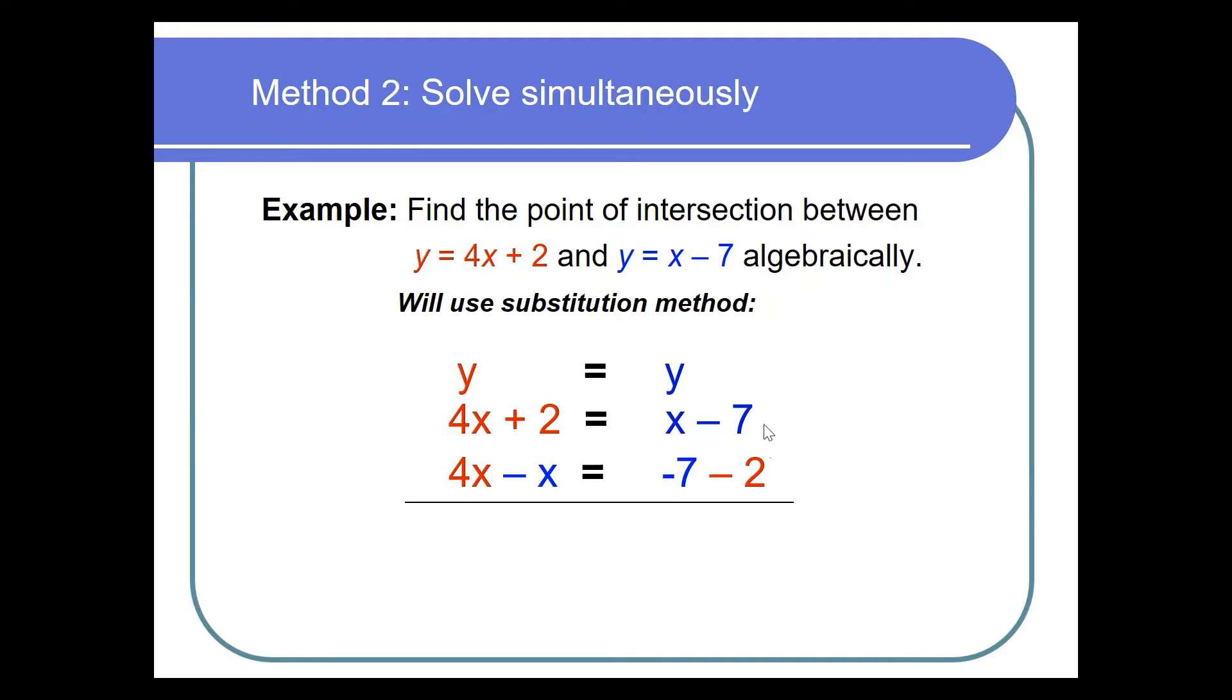So when we switch, we switch the sign. So you can see plus has gone on the other side of the equal sign, it's now minus, and this positive 2 is going on the other side and it changes from plus 2 to minus 2. And then we can quickly simplify this. So 4x - x is 3x and -7 - 2 is -9. So divide by 3 on both sides and that gives you x value of -3.